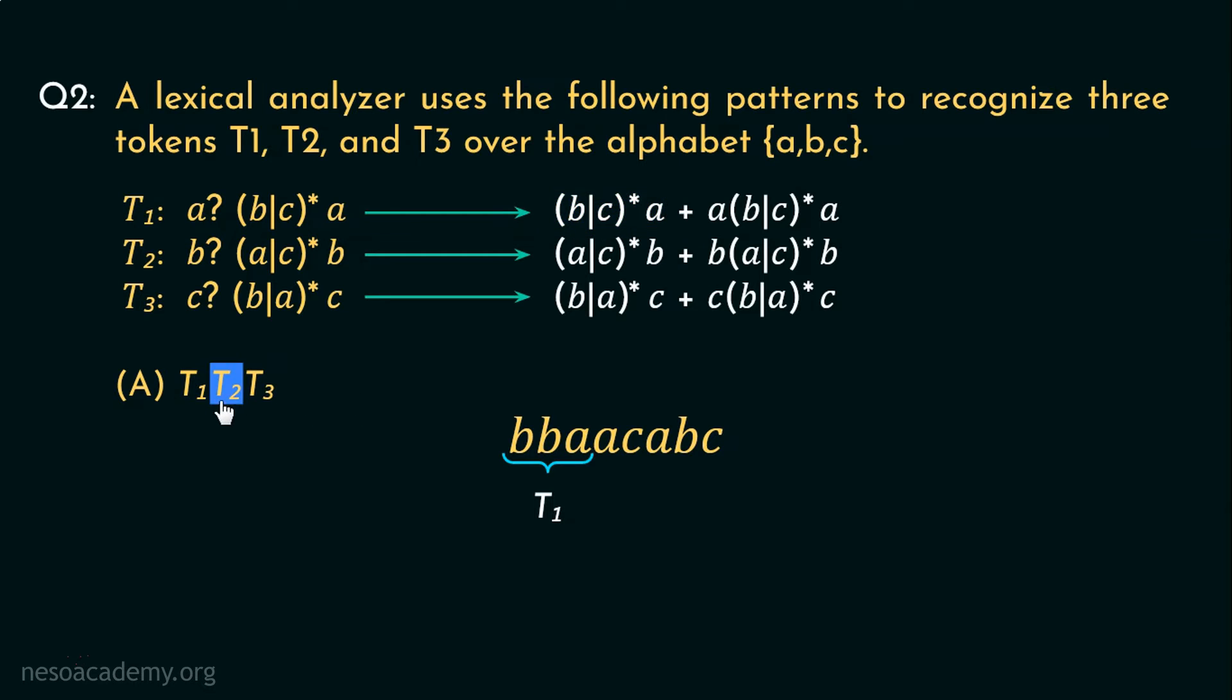Coming to T2, the remaining portion of the string begins with A. So if we consider this regex portion, we can represent A, C, A, B using T2. How? Because (A or C) whole star can help us achieve A, C, A and this B will generate the B following A, C, A.